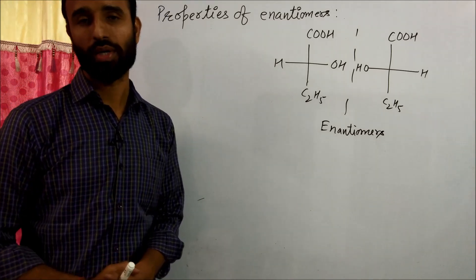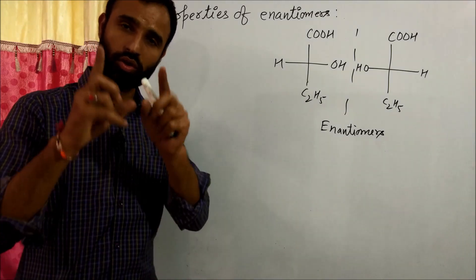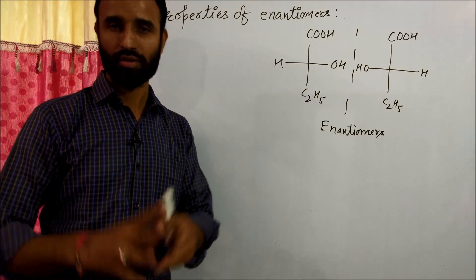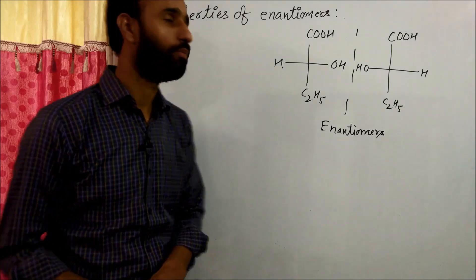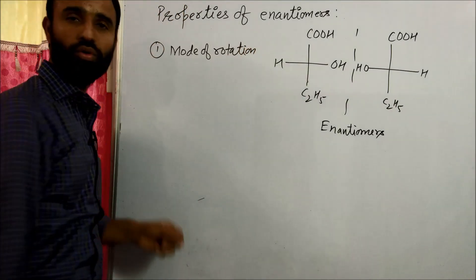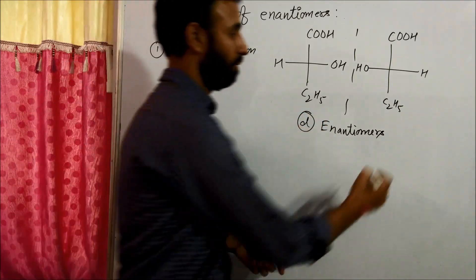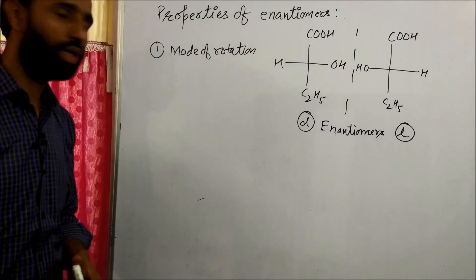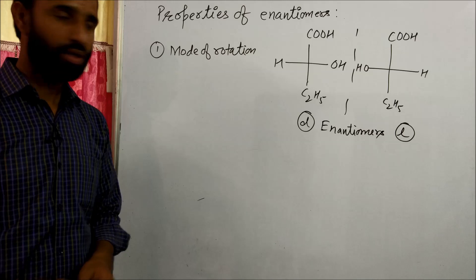Two physical properties are different. Can you guess? First is mode of rotation. You know one form is D, then other form is L. One is dextrorotatory, so second is levorotatory. So first is mode of rotation.